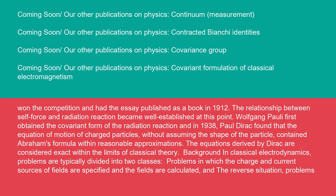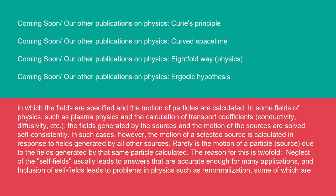Background: in classical electrodynamics, problems are typically divided into two classes. Problems in which the charge and current sources of fields are specified and the fields are calculated, and the reverse situation problems in which the fields are specified and the motion of particles are calculated. In some fields of physics, such as plasma physics and the calculation of transport coefficients, conductivity, diffusivity, etc., the fields generated by the sources and the motion of the sources are solved self-consistently.